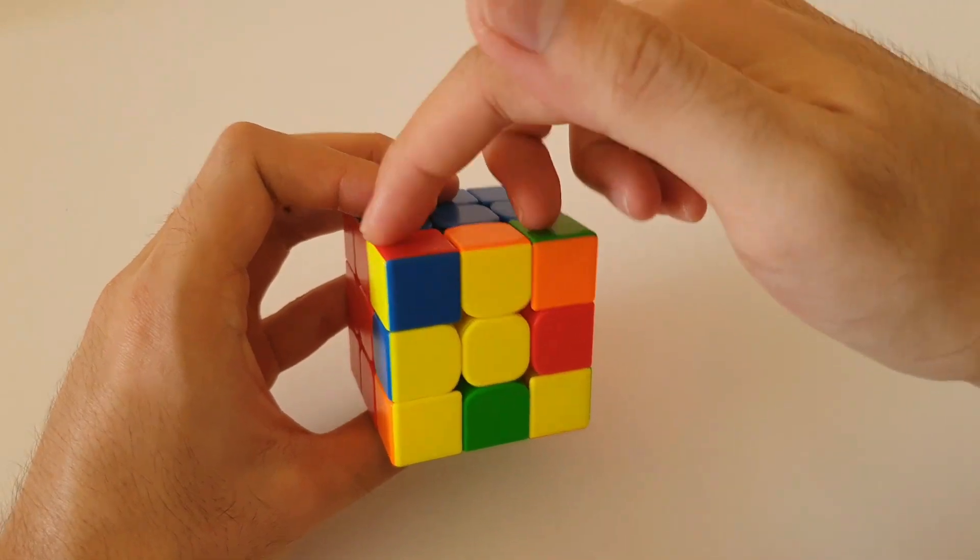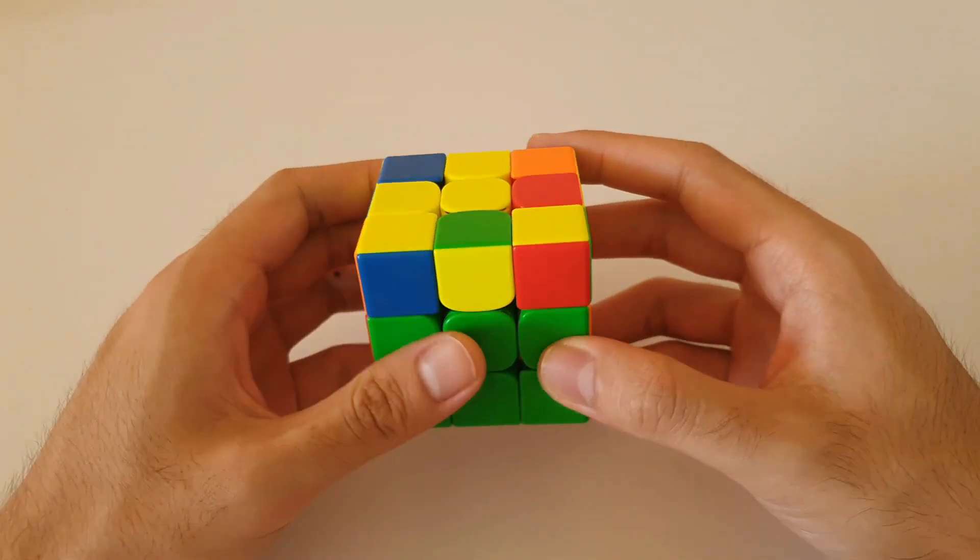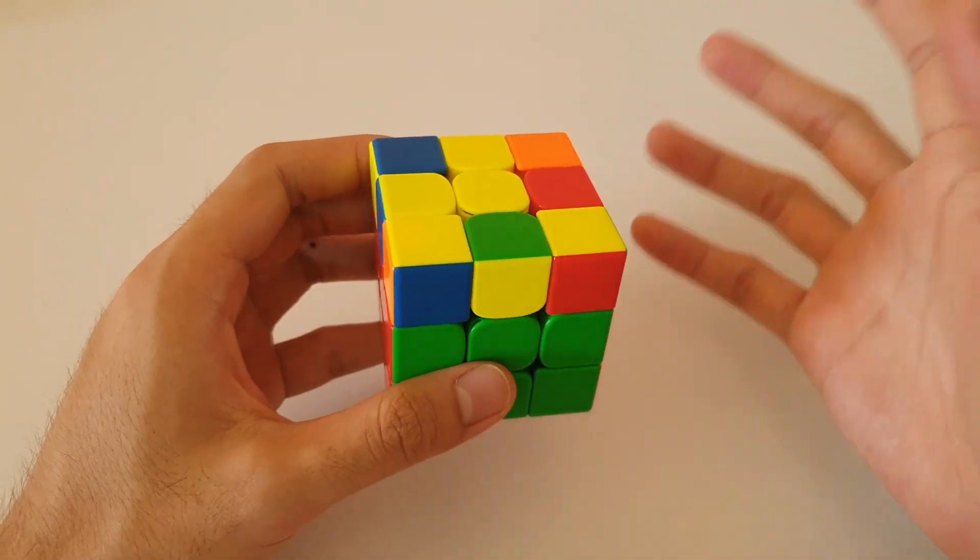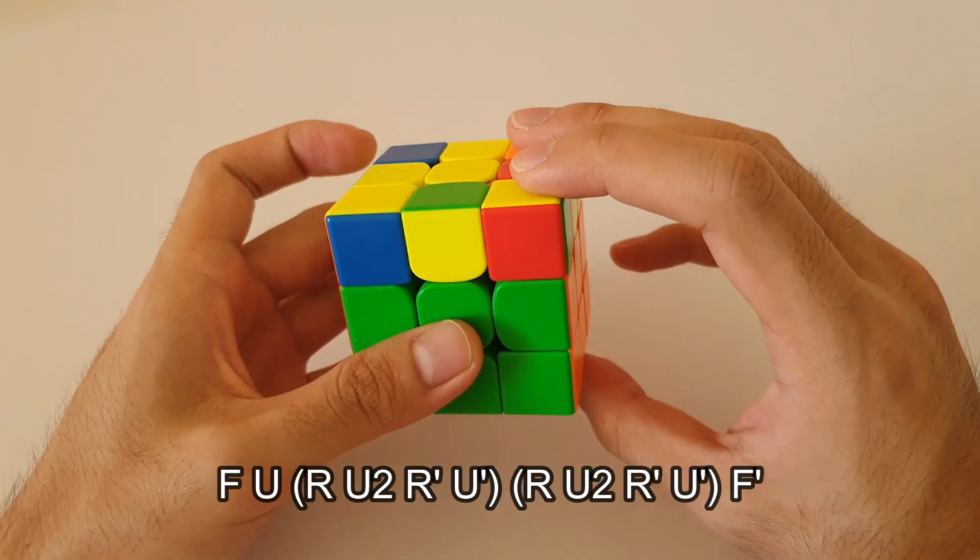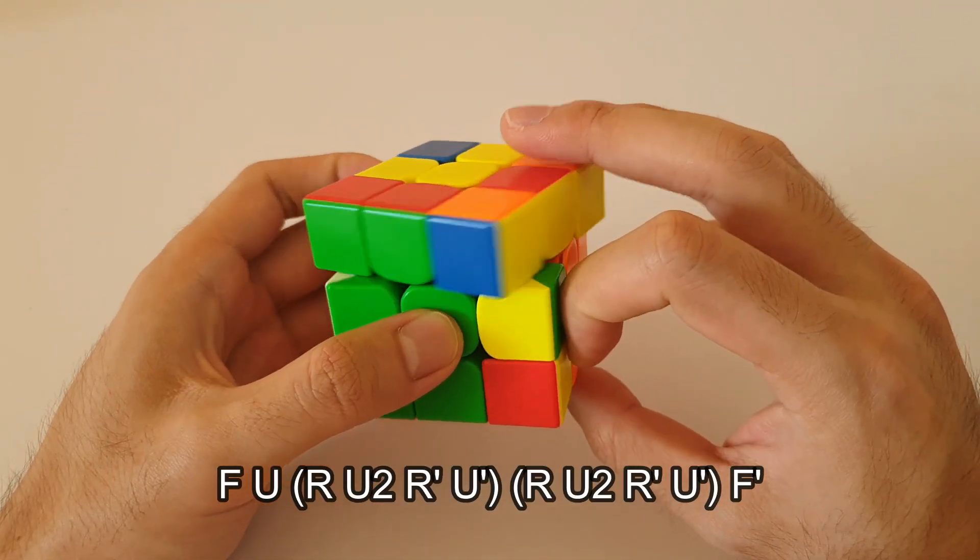So similar to the headlights case, but of course there's no headlights here. But same angle. From here, we want to start off with an F followed by a U, like this.